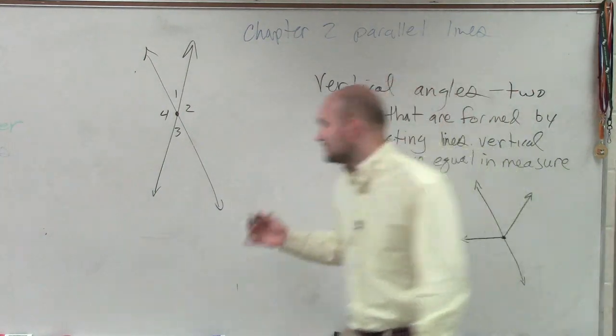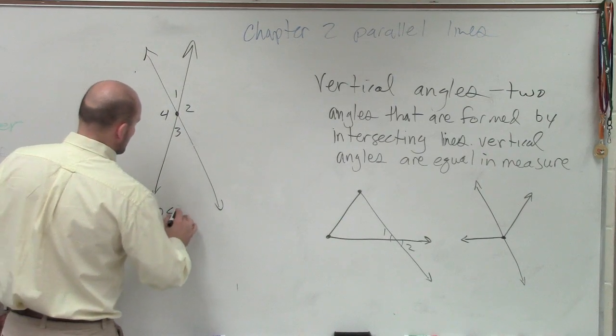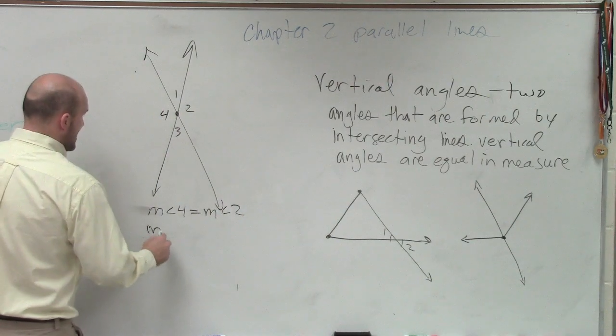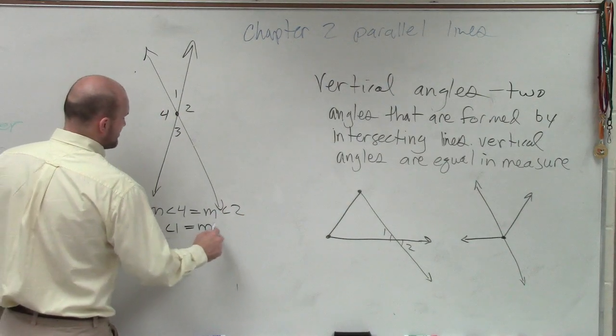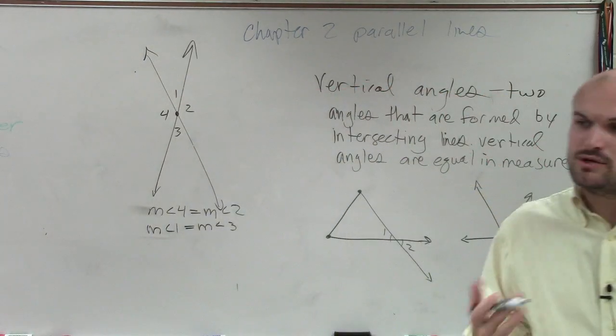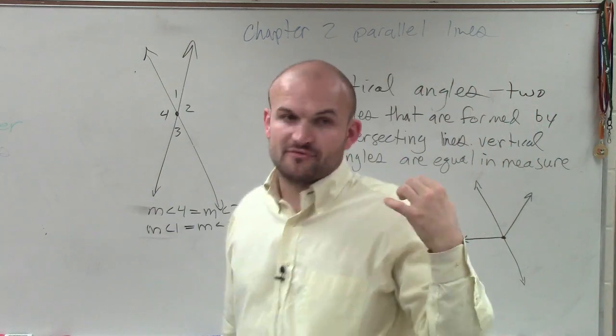So guess what, ladies and gentlemen? The measure of angle four is equal to the measure of angle two. Measure of angle one is equal to the measure of angle three. So if you guys take angles and you cross them, what I want you to understand is vertical angles are across from each other from the vertex.